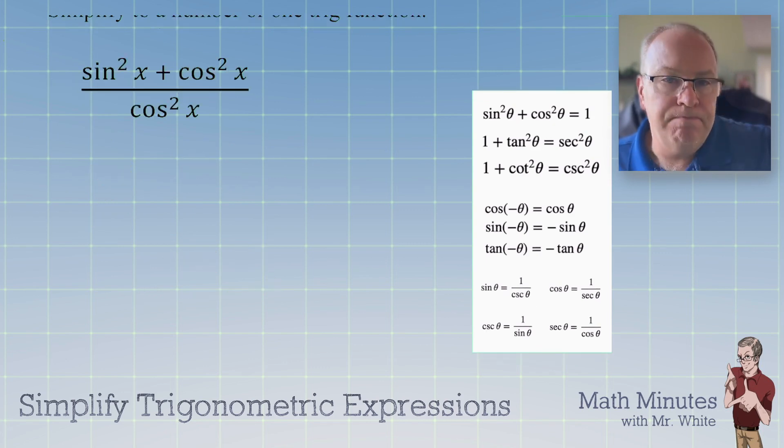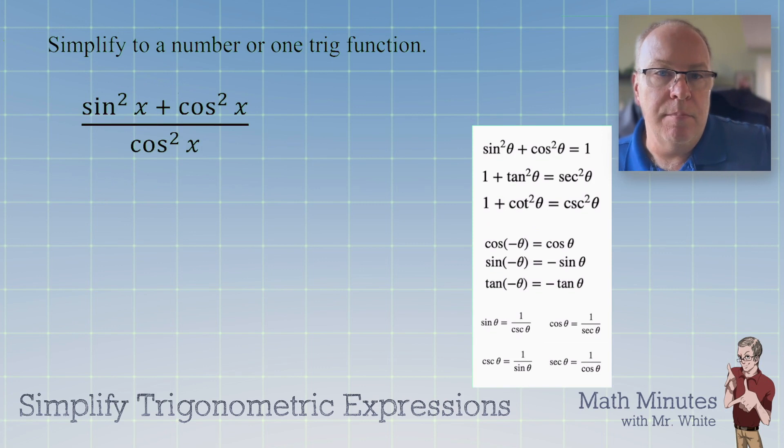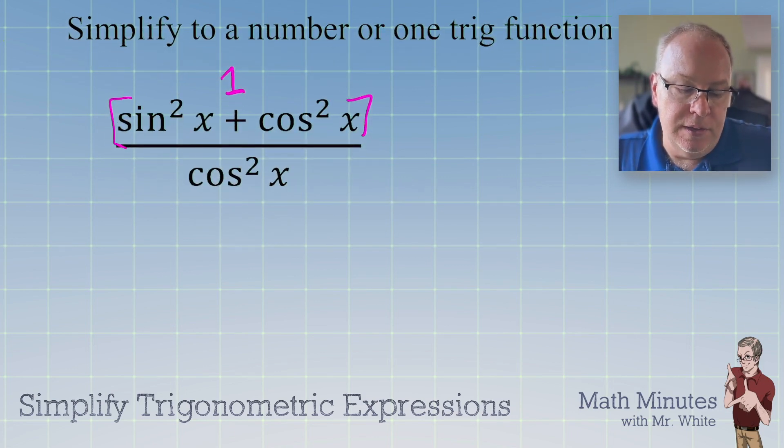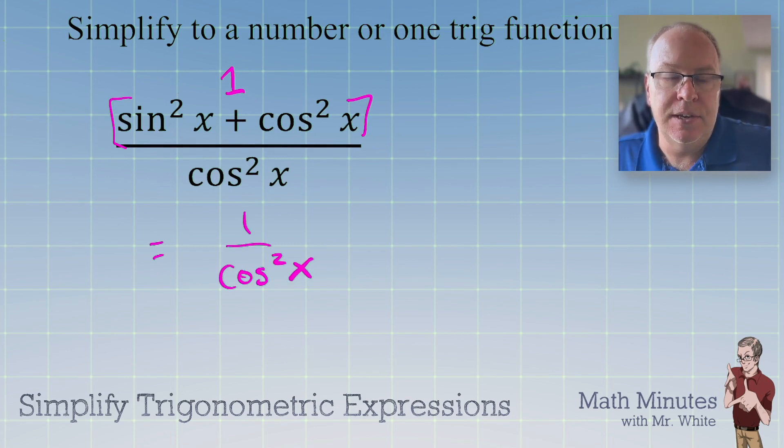Alright. Let's go to the second one. What do you see here? We're going to simplify this to a number or a single trig function. What can we do here? This one's pretty obvious, I think, isn't it? sin²θ + cos²θ = 1. So this equals 1/cos²θ. That's easy.